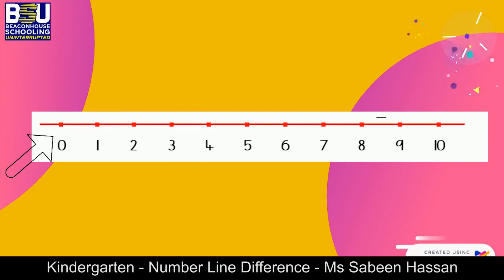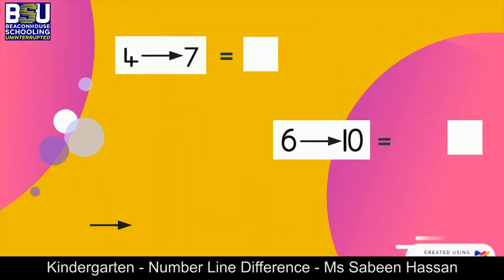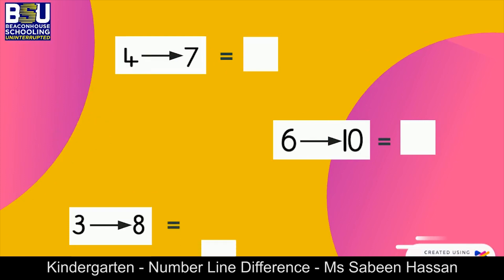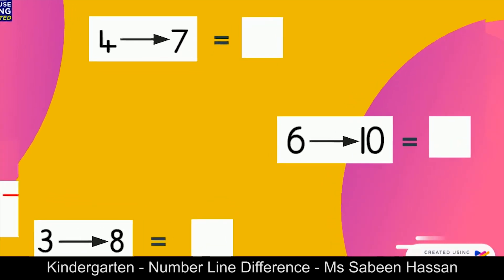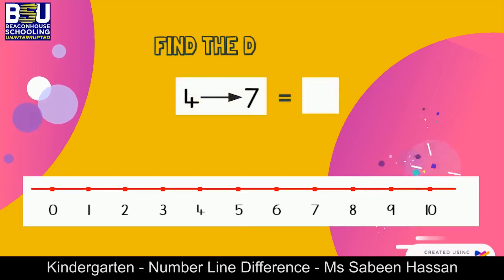It goes till it reaches its maximum number. We have some pairs of numbers and we have to find the difference between them. Let's do this activity together. The first question is that we have to find the difference between the numbers four and seven.